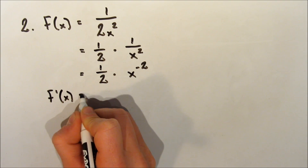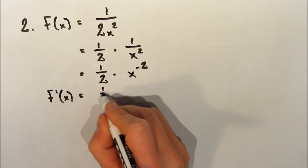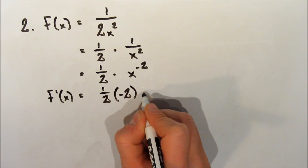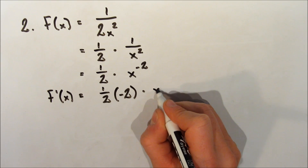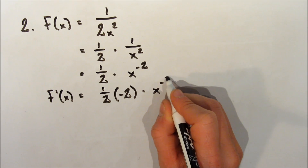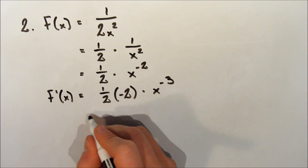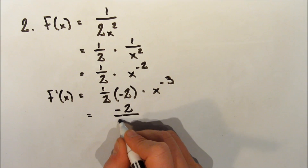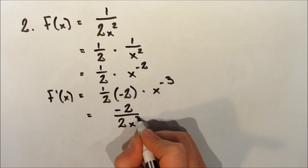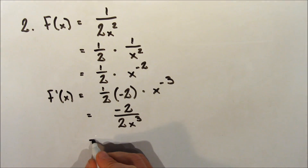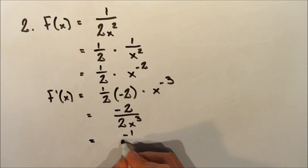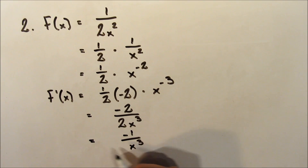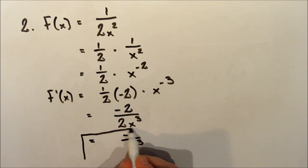Now we can solve the derivative by using the power rule as we normally would. It's going to be 1 half multiplied by the exponent, which is negative 2, and that's going to be multiplied by x to the exponent negative 3 because we're taking 1 away from negative 2. Now we can simplify that — we're going to get negative 2 over 2 times x cubed, and those 2's can cancel out, leaving us with negative 1 over x cubed.